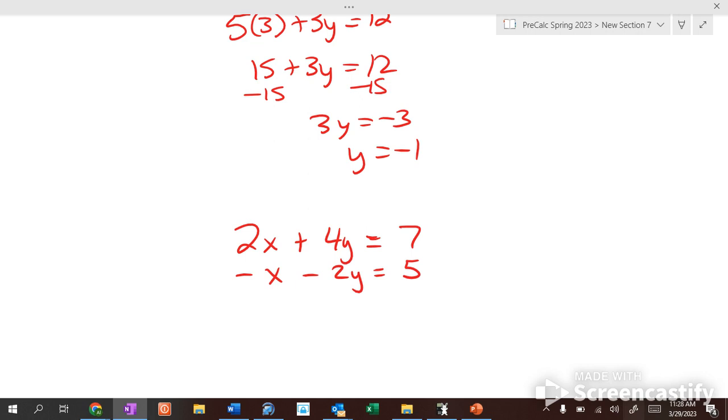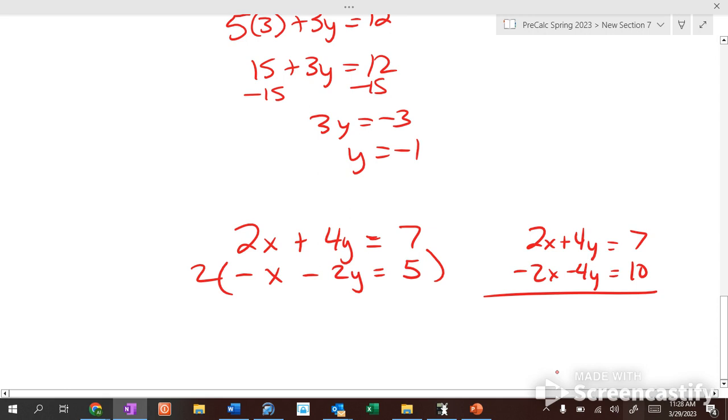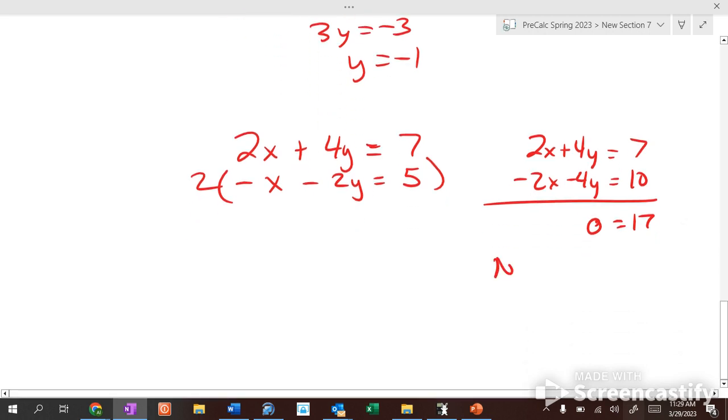For this one, how do I create opposites? We multiply my bottom row by 2. So I have 2x plus 4y equals 7, and negative 2x minus 4y equals 10. So if we add our columns, I get 0 and 0, so 0 equals 17. What does that tell me? This is no solution, because 0 does not equal 17.